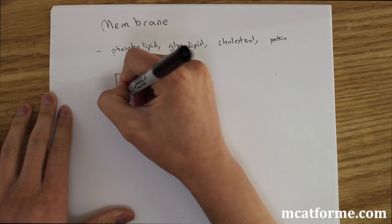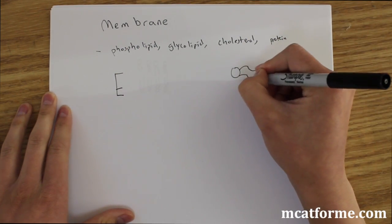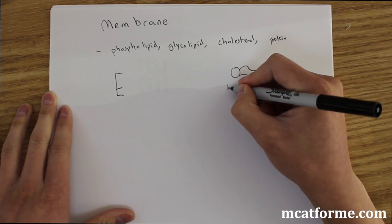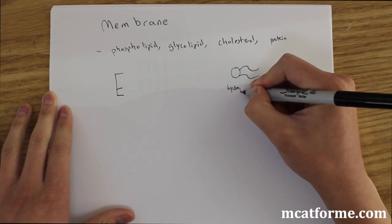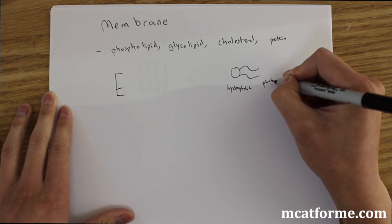So phospholipids, what do those look like? So I guess the first thing I'll do is I'll draw what most of us know they look like. So we have this head and we have this tail. This head is hydrophilic and this tail is hydrophobic.